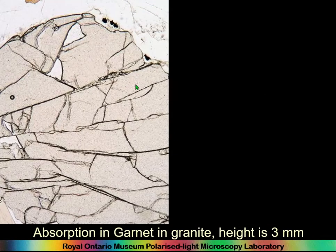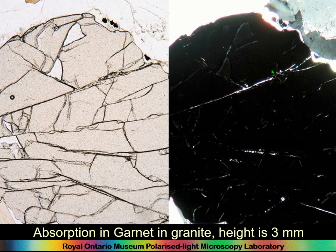Here we have a nice cracked-up bit of Garnet. You can see the high relief compared to the minerals around it, and here it is isotropic. It looks like there's quartz around it — but the Garnet has much higher relief than the quartz.